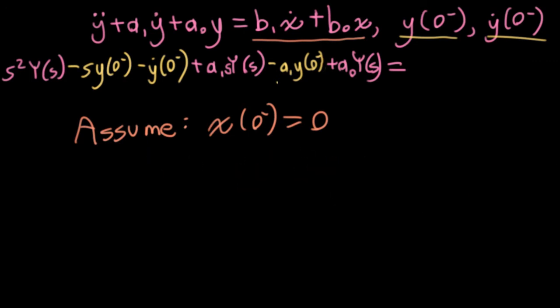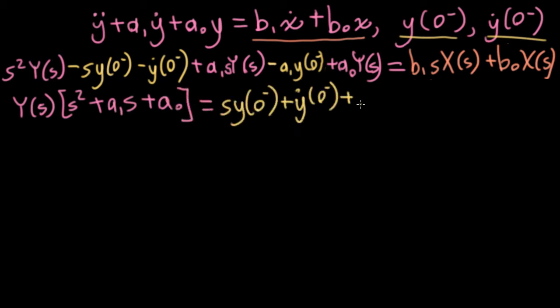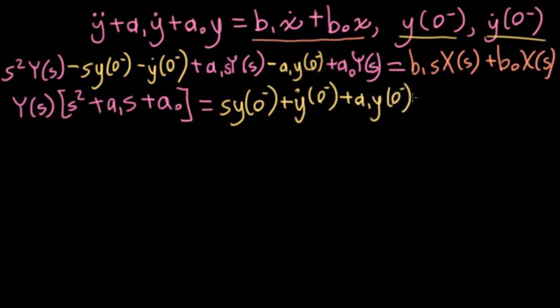Okay, so with this fairly important assumption on the pre-initial conditions of the input, on the right-hand side, we have b1s + b0. Okay, so at this point, you know the drill. I'm going to factor out the capital Ys, and we're going to move everything having to do with the initial conditions over to the right-hand side. And then I have the terms relating to the input that were already on the right-hand side.